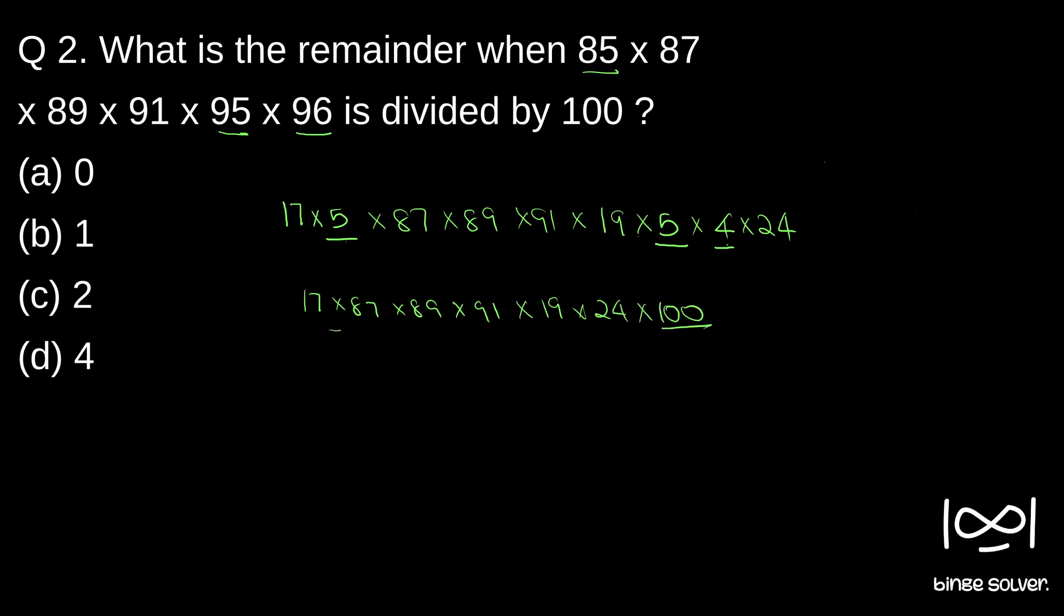So some huge number × 100. So we will have 100 here. So if you divide it by 100, 100 and 100 cancel. So the remainder will be 0.